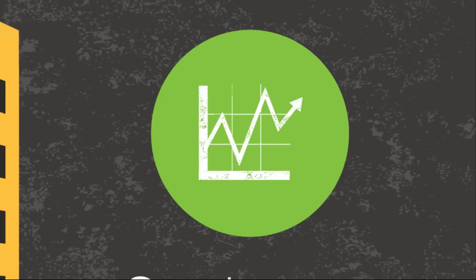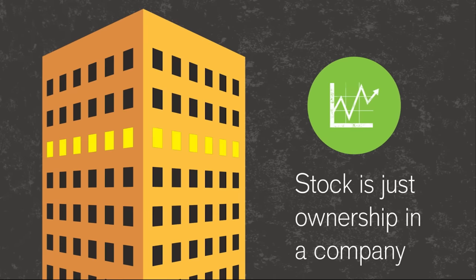Stock is just ownership in a company. There are many ways to classify stock. Two major ones are size, called market capitalization or cap, and company location. Each classification has its own typical level of risk.